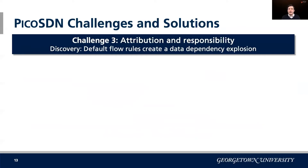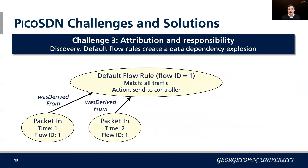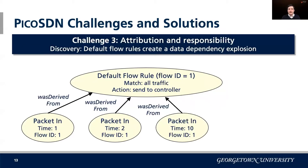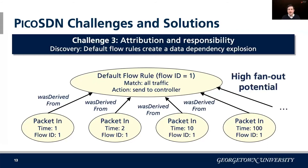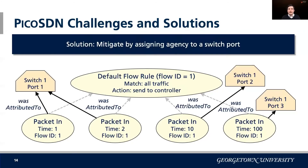When a switch is added to the network, the controller adds a default flow rule that matches packets not otherwise matched — essentially the action of last resort so unmatched packets don't get dropped at the switch. For learning switches, this becomes hard because everything looks as though it depends on this default flow rule, causing a high fan-out. To mitigate that, we assign agency or responsibility on a per-port basis, grouping dependencies so that each port has responsibility for the packets sent on it.